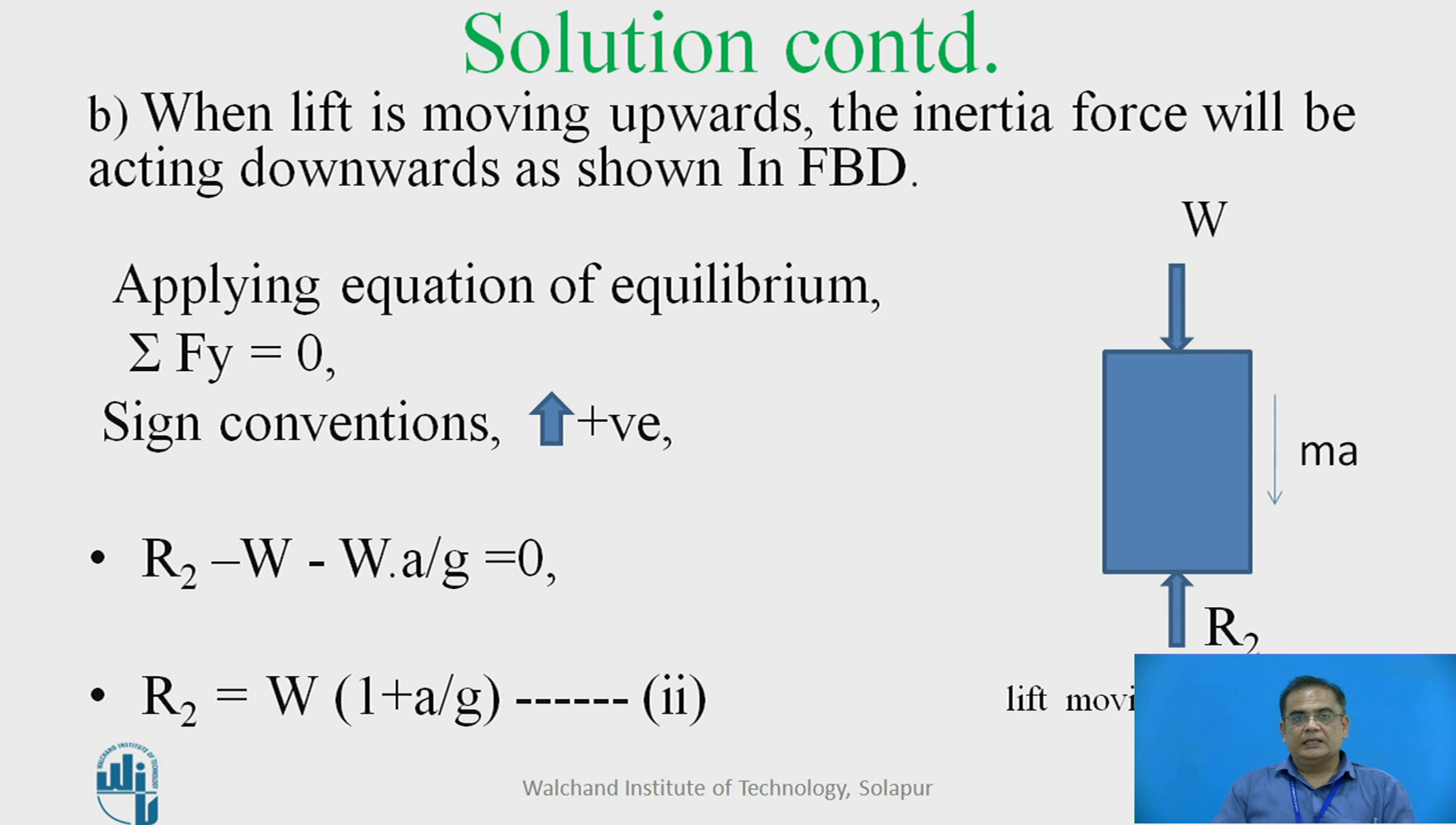Now, let us consider the second case. In second case, lift is moving upwards. The free body diagram is shown here. W will be acting again downwards. R2 will be upwards. Let this reaction be now R2. Inertia force or D'Alembert's force will be now acting downwards, equal in magnitude to Ma because lift is moving upwards.